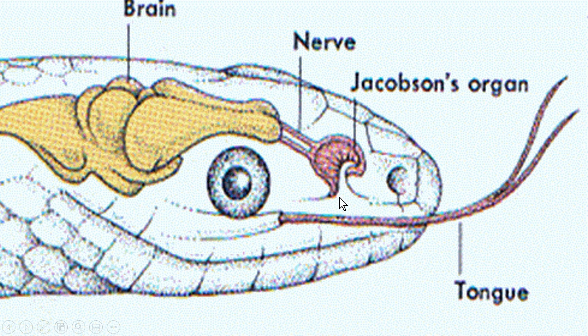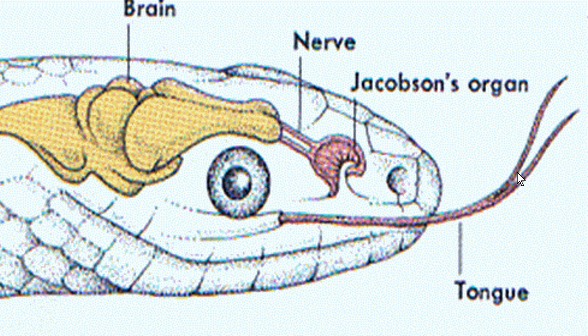Jaise ki humne aapko question mein bhi bataya ki ek snake apni tongue ko smell sense karne ke liye use karta hai. Agar apna dhyaan is snake ki tongue par le jaayein, to iska shape ek fork type ka hota hai. Fork type ka shape hone ki wajah se iska area badh jaata hai, jisse snake kaafi maatra mein air ko apne andar le jaata hai. Aur yahan pe bahut hi interesting baat yeh hai ki snake ki tongue ke oopar aisa koi bhi sensor nahin hai jisse snake smell ko sense kar sake.